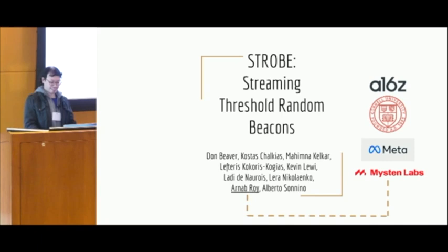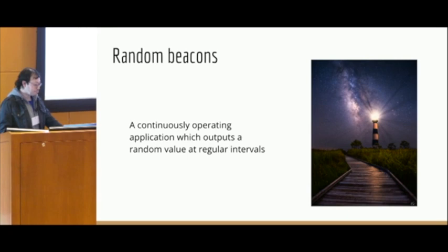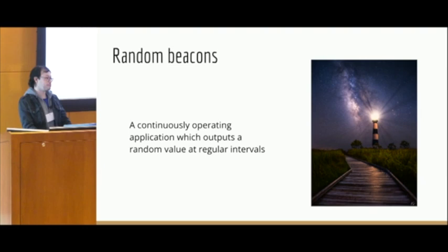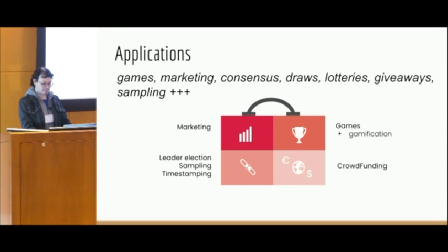So what is Strobe? It's a random beacon. What is a random beacon? It's a continuously operating application which outputs a random value at regular intervals. Strobe is one of these random beacons, and there are some interesting properties about Strobe that I'll talk about in this talk.